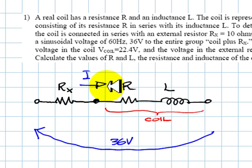That current will produce a voltage drop in this resistor and a voltage drop in the coil as well. And we know those voltages.